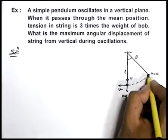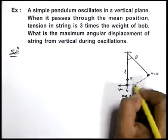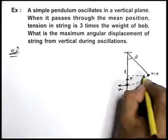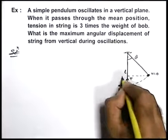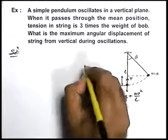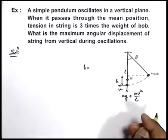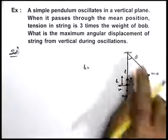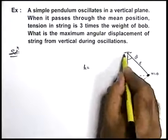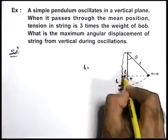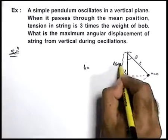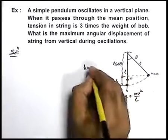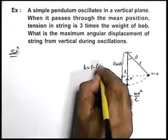As the bob is started from extreme position and it is reaching the bottom most position, we can say it is fallen by distance h, and the value of this h can be given as, the total length is l, this is also l, so the distance from here to here, this is l cos theta. So we can write h is equal to l minus l cos theta.